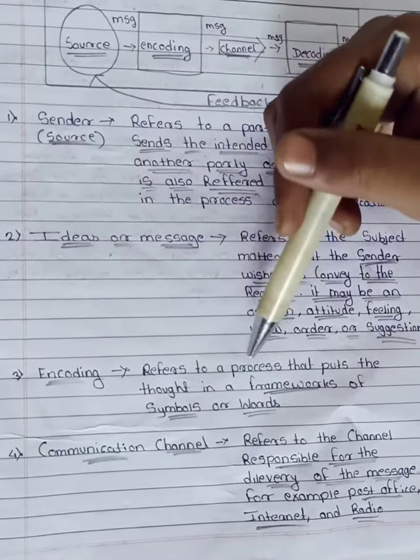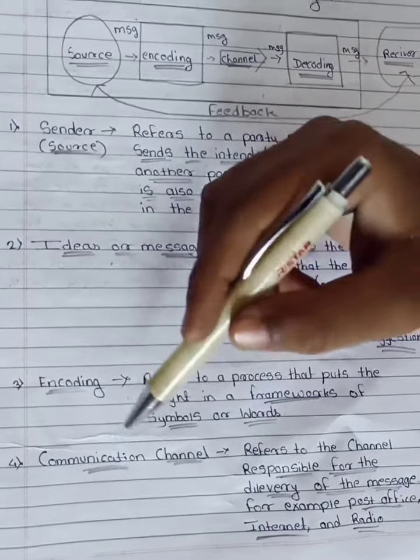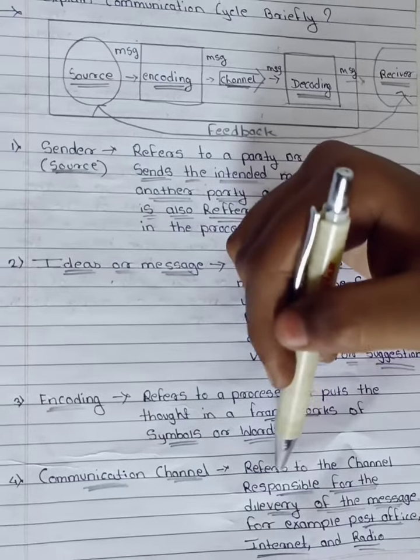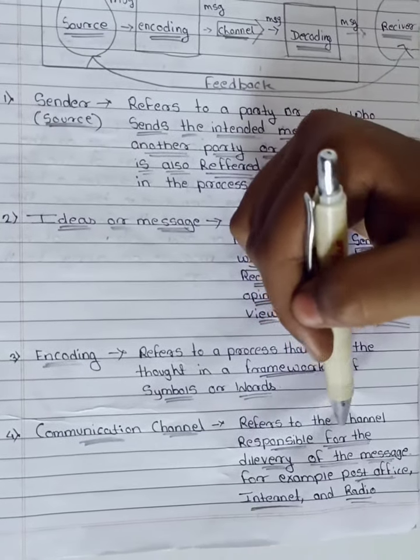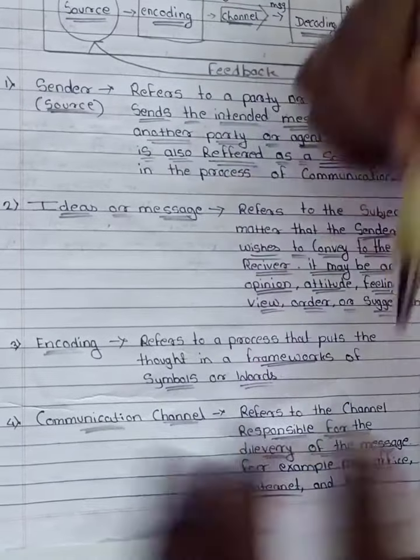Encoding refers to a process that puts thought in a framework of symbols or words. Communication channel refers to the channel responsible for the delivery of the message, for example post office, internet and radio.